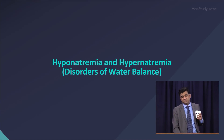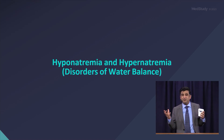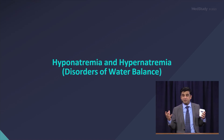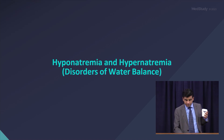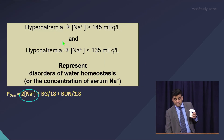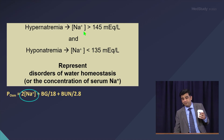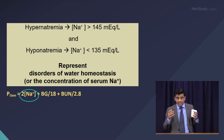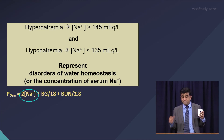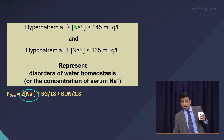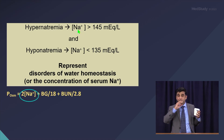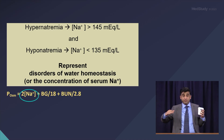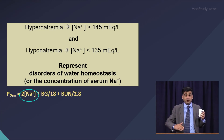Hyponatremia and hypernatremia — a lot of early students struggle with this — these are water disorders, not sodium disorders. There's a problem with water balance, not with sodium. We call it hyponatremia and hypernatremia, but it is a water balance issue. Hyponatremia is serum sodium less than 135, hypernatremia is more than 145, but they represent disorders of water homeostasis. Because sodium is a concentration — total body sodium divided by total body water — when water goes up, concentration goes low; when water is low, concentration of sodium goes high.